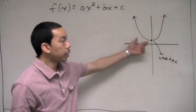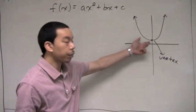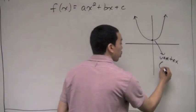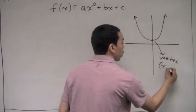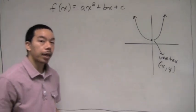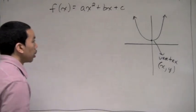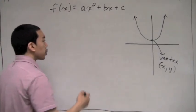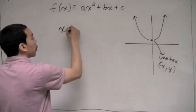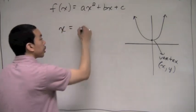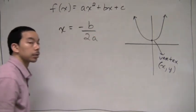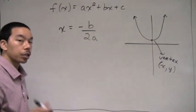The vertex is a point on the graph where it changes direction, so it's an ordered pair: x and y. To find the x value of the vertex, we use the formula negative b over 2a.